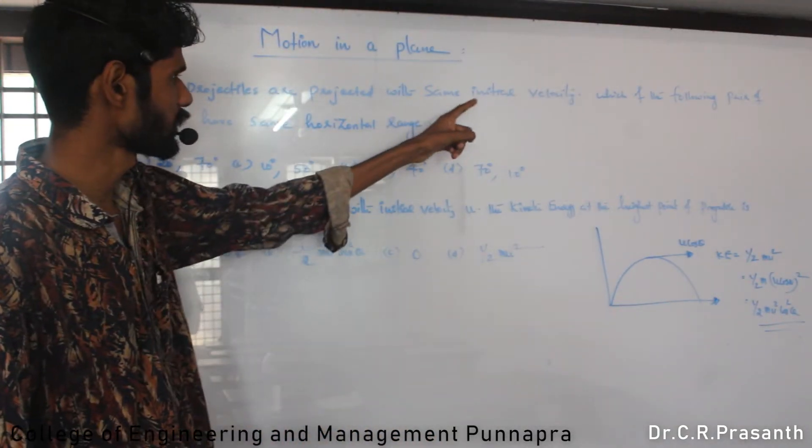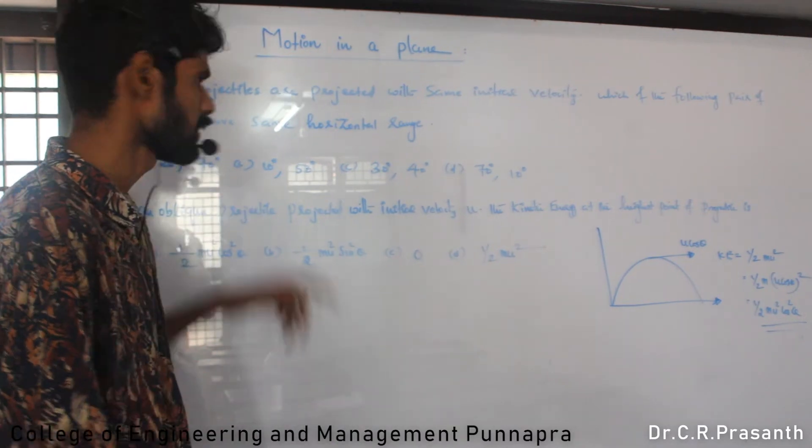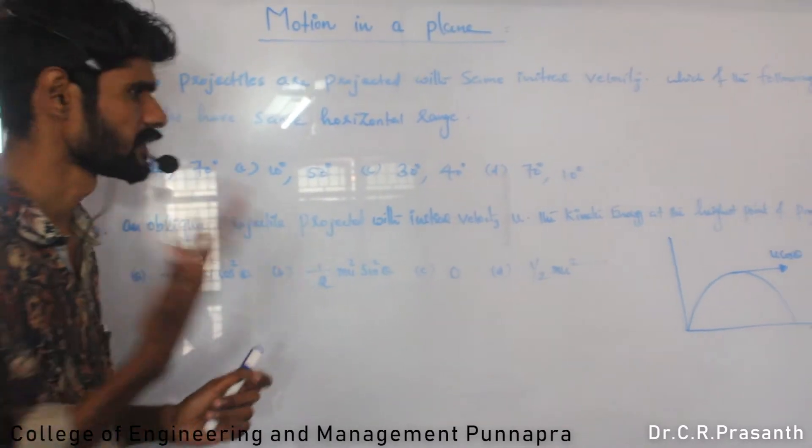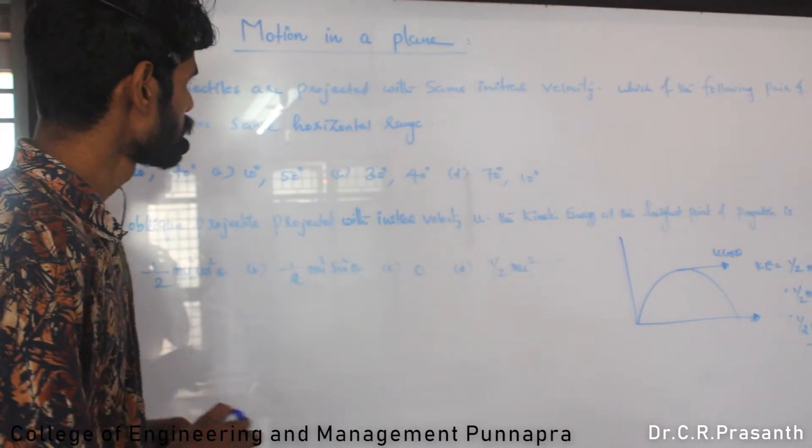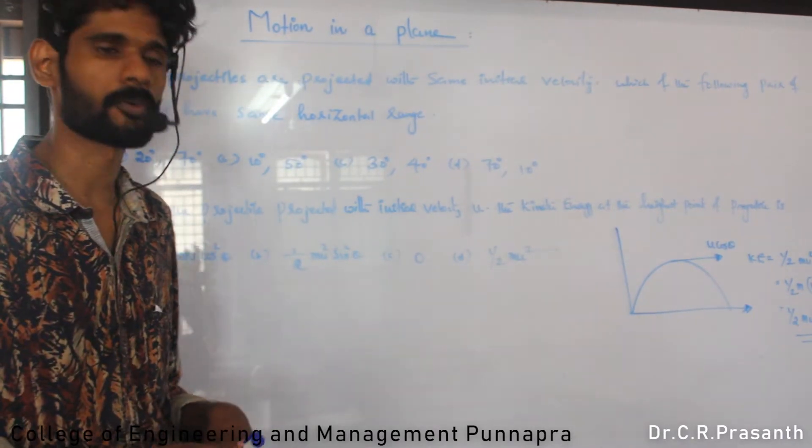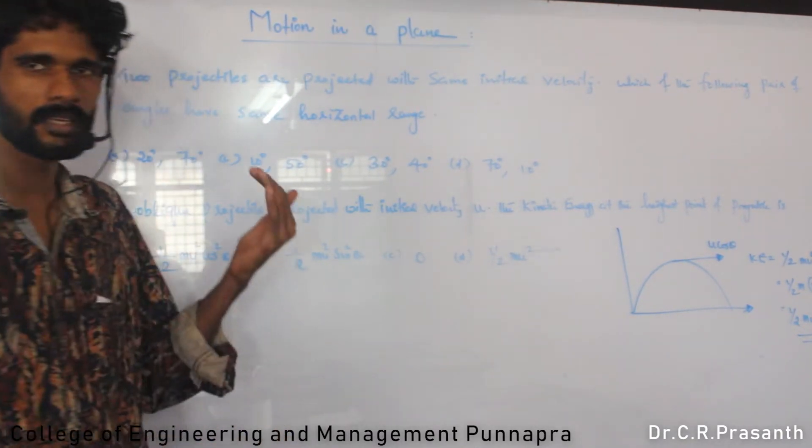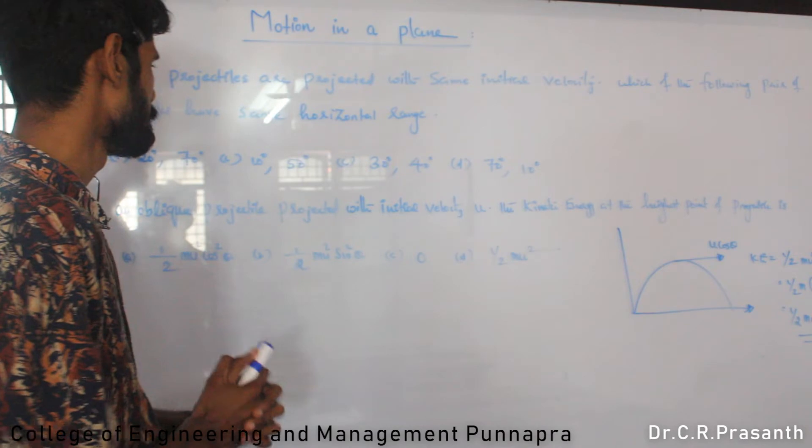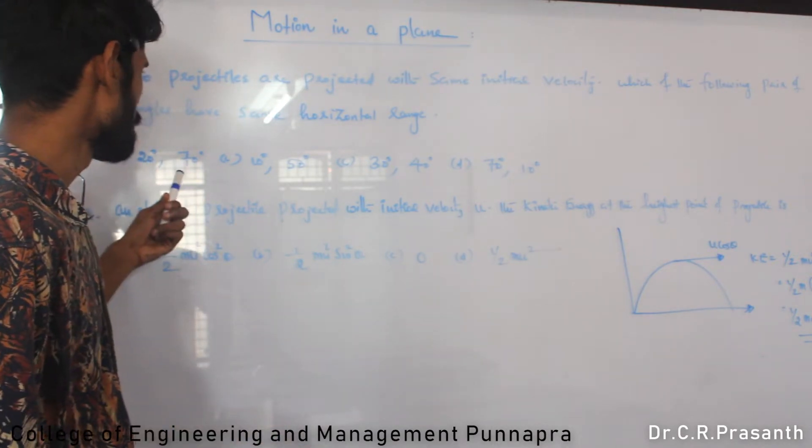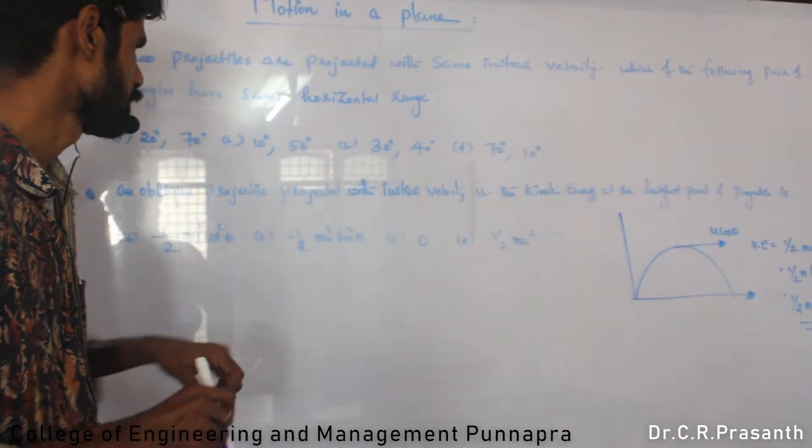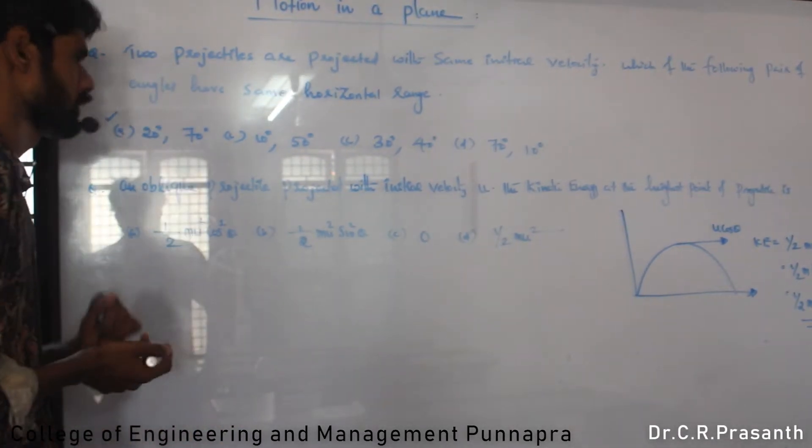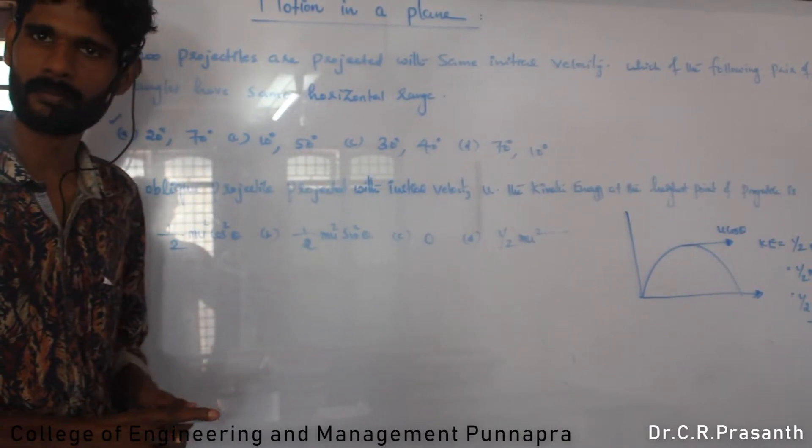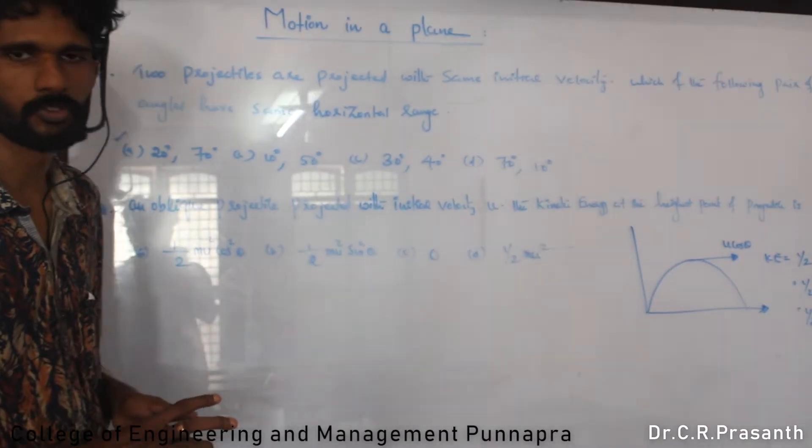Two projectiles are projected with the same initial velocity. Which following pair of angles give the same horizontal range? Two projectiles with the same initial velocity will have the same horizontal range if the angles are complementary to 90 degrees.